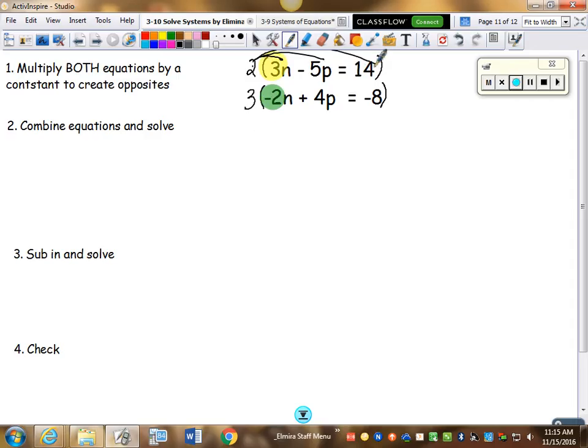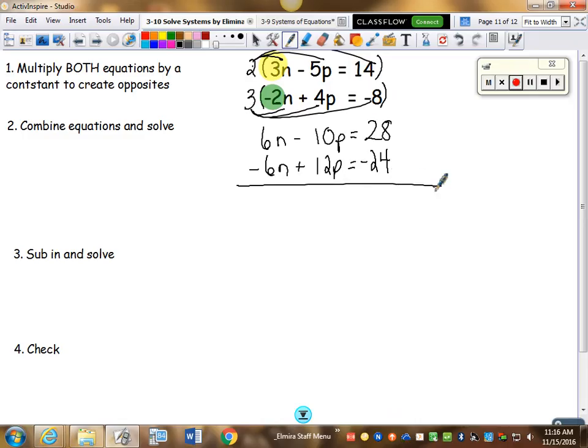So then I'm going to distribute that to everything. So 6n minus 10p equals 28. Then I'm going to do the second distribute right underneath it. Negative 6n, ooh look at there, 6n's canceled. Plus 12p equals negative 24. Now I have these set up in a way that I can cross out because now I have opposites. So negative 10 plus 12 is a 2p. 28 minus 24 is 4. Divide by 2, p equals 2.